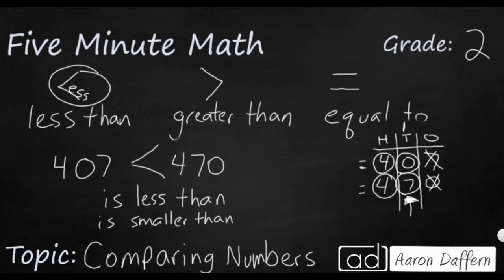So that's how we use place value, always starting with the largest place value first, and then moving to the right when comparing two numbers.